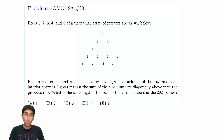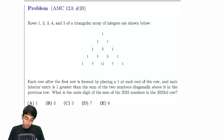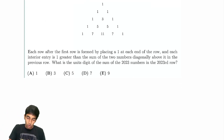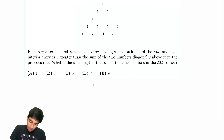Now let's tackle number 20 on the 12A. Rows 1, 2, 3, 4, and 5 of this array are shown. I won't bother reading the problem to you — I'll just explain it.